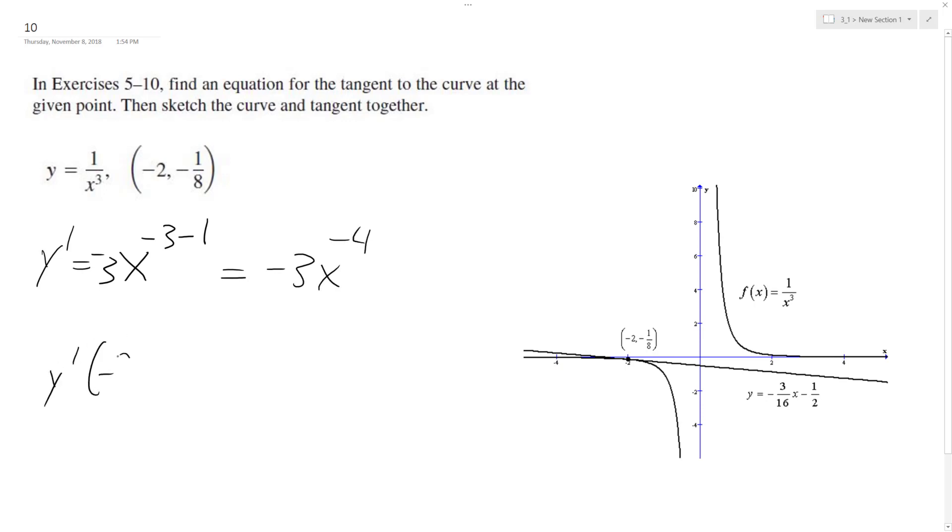So y prime of negative 2 is going to be equal to negative 3 times negative 2 raised to negative 4. You've got to be careful here because you've got to remember that it's going to be negative 3 over negative 2 raised to the 4th. So it's going to be negative 3 over 16.